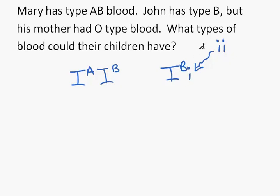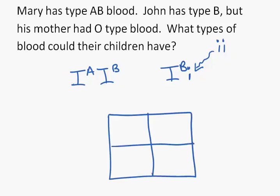We now know the two parents. We simply do a Punnett square as normal. We fill in the parents on the two sides: I^A and I^B being Mary. And up here we have John: I^B, little i. Then we fill in the Punnett square as per normal.